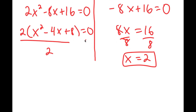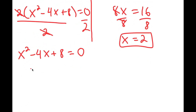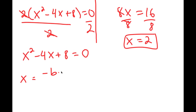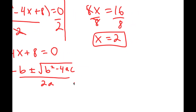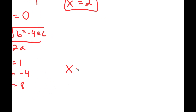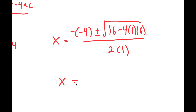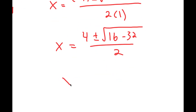Continuing, if I divide both sides by 2, I get x squared minus 4x plus 8 is equal to 0. Using the quadratic formula — negative b plus or minus the square root of b squared minus 4ac, all over 2a — where a is 1, b is negative 4, and c is 8, I have x equal to negative of negative 4 plus or minus the square root of negative 4 squared, which is 16, minus 4 times 1 times 8, all over 2 times 1. This turns into 4 plus or minus the square root of 16 minus 32 over 2.